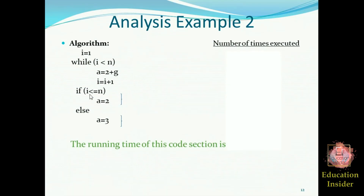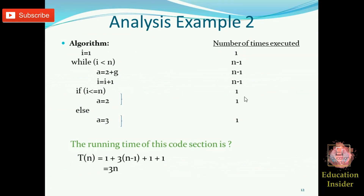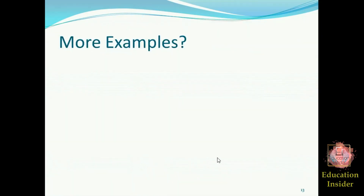Whichever section has the maximum number of iterations will be the running time of that part of the algorithm. After adding up all parts, we get the total running time. The one represents the if-condition which always executes, and since both sections are equal, we select one of them. After computing this, the final running time is 3n.